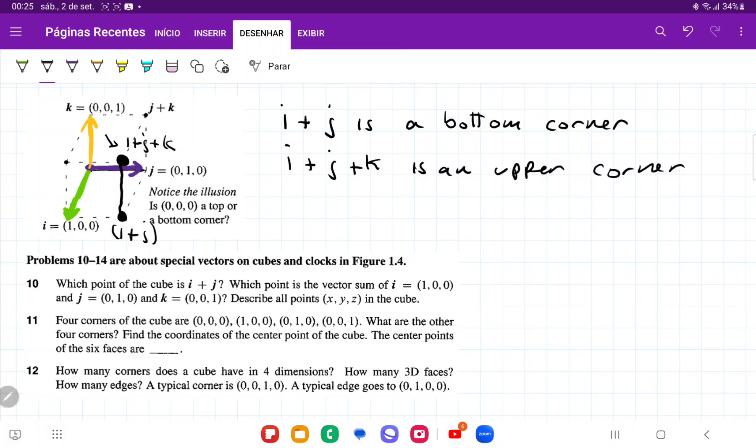And then it's asking us to describe all points x, y, z in the cube. And basically we have to think that all the points that are between 0 and 1 in the vertical direction, in the horizontal, and in the forwards direction, all of the points that are between 0 and 1 are included.